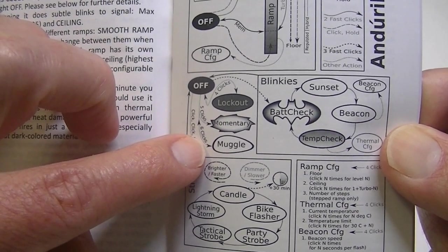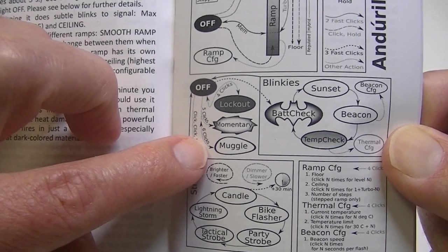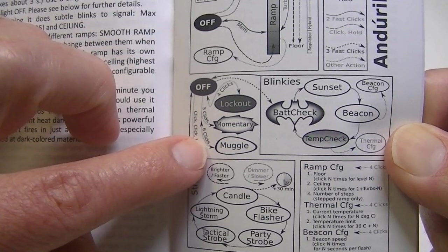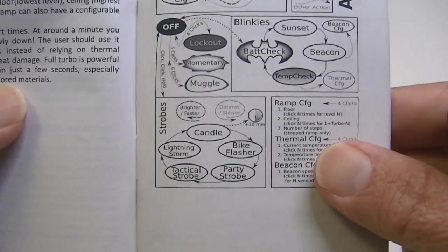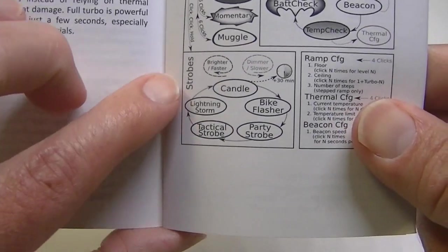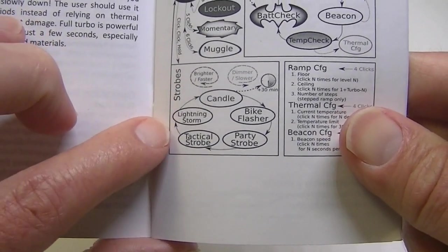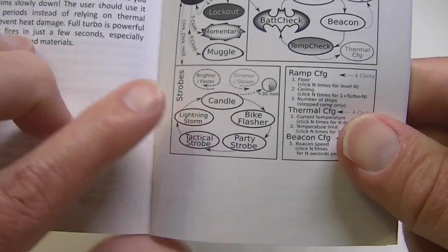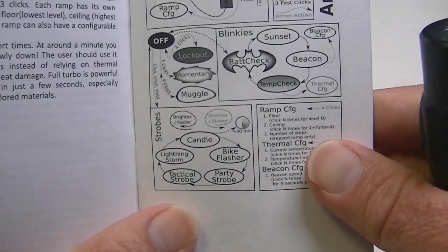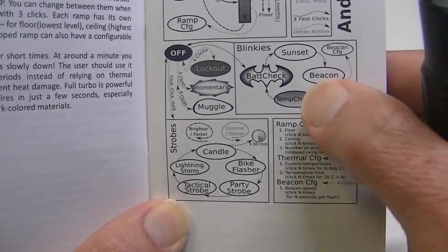It has all the strobes down here: from the candle flash to the lightning storm to the tactical strobe, the party strobe, and the bike flash. And over on the blinky side it has the battery check which you can do anytime.